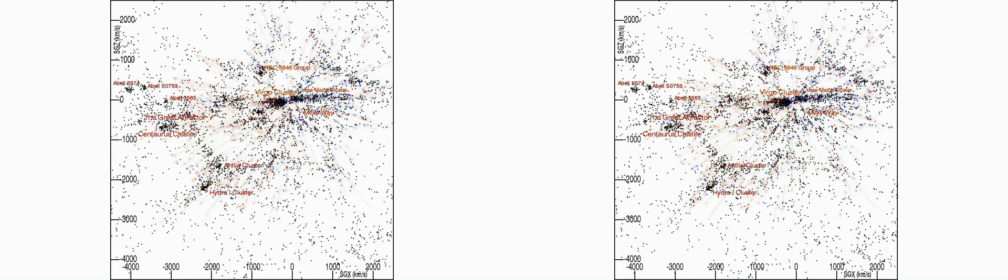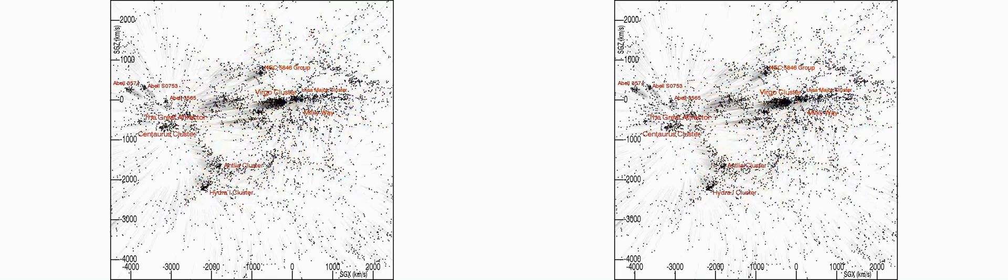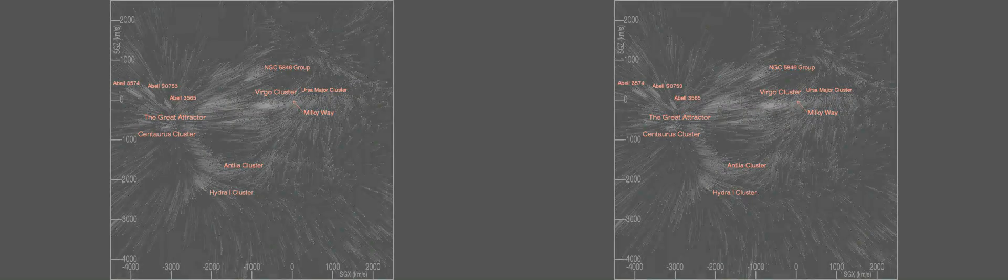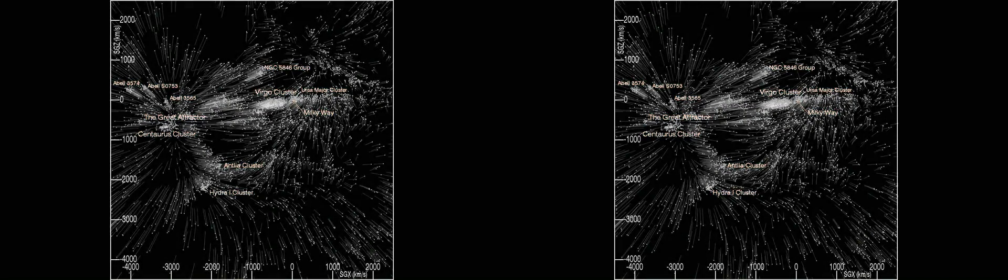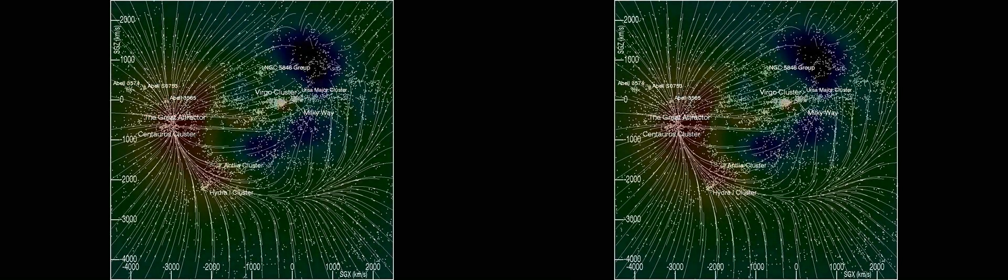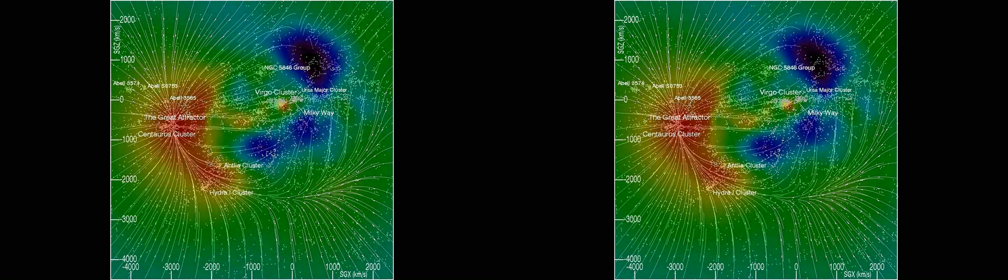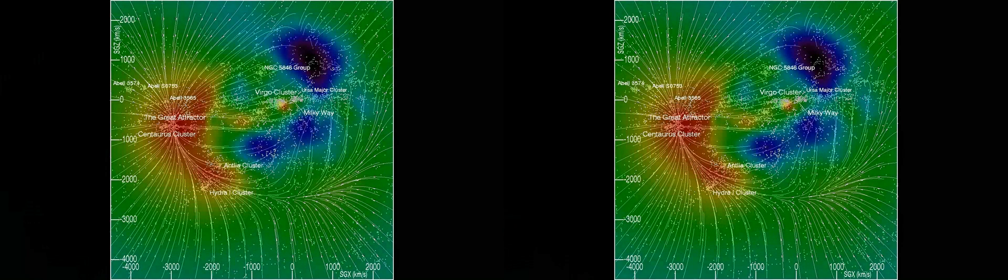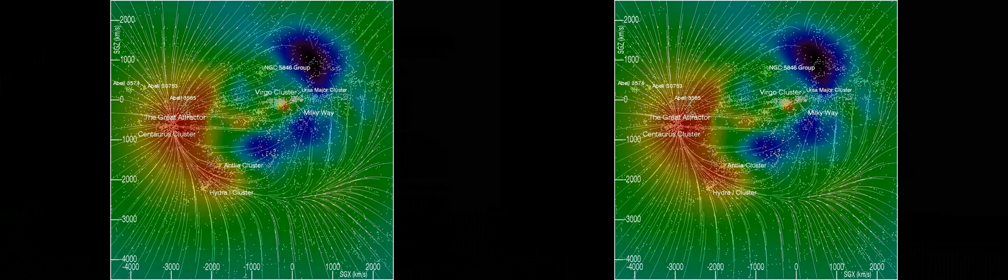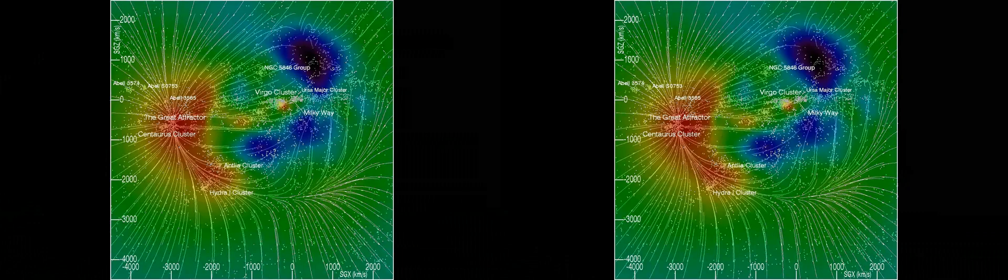We transition to the representation permitted by the Wiener filter model. With three-dimensional peculiar velocity tags given to all the galaxies in the redshift catalog. And then transition to the representation of flowlines and the underlying density field. Again, we see the importance of the region around the Centaurus cluster. Densities go to green, the mean density, beyond the domain of the measured density constraints.